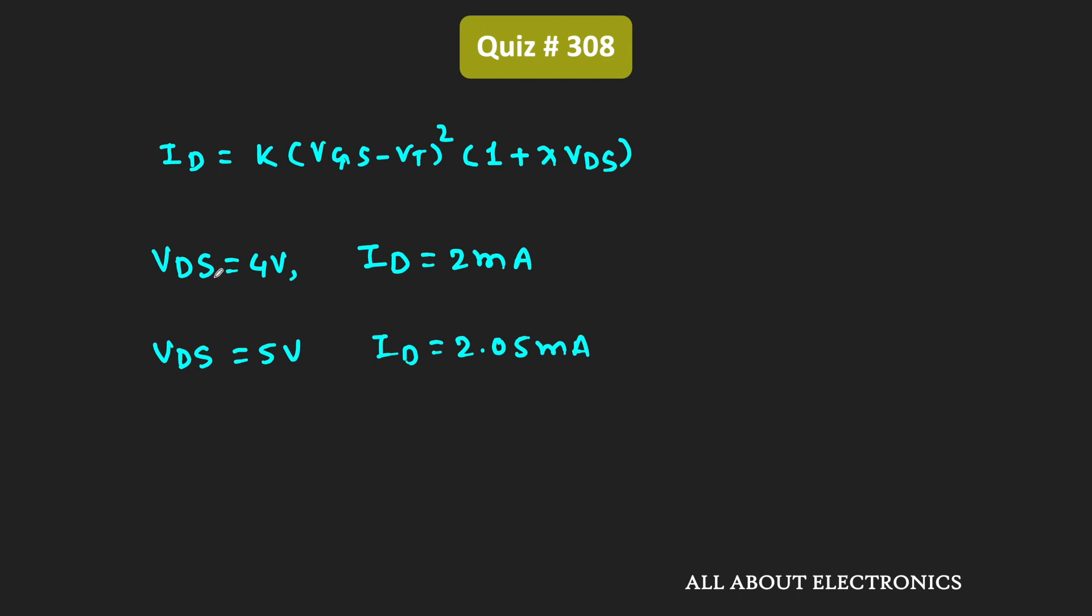So let's call this Vds as Vds1, and at that time the drain current is equal to Id1. And whenever this Vds2 becomes 5V, then this drain current Id becomes 2.05 mA.